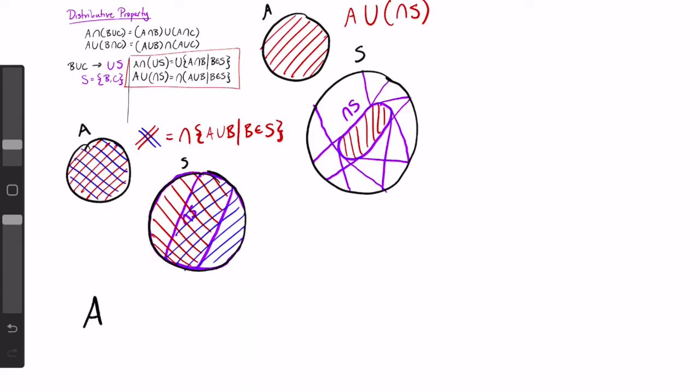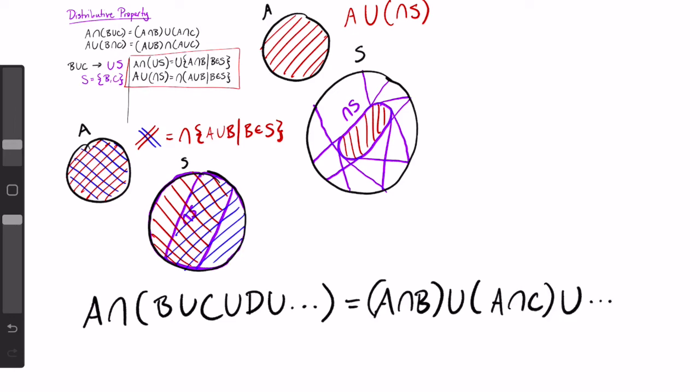An easier way to think of it may be A intersect (B union C union D union everything else) equals (A intersect B) union (A intersect C) union (A intersect D) union etc., where S in the previous example would be the set containing B, C, D, E, etc.